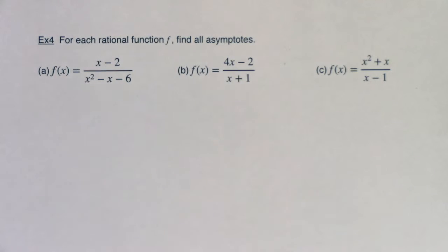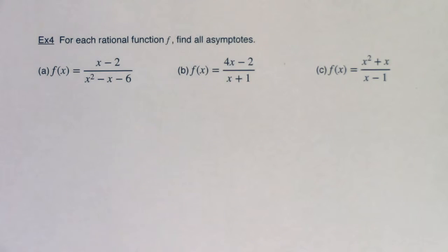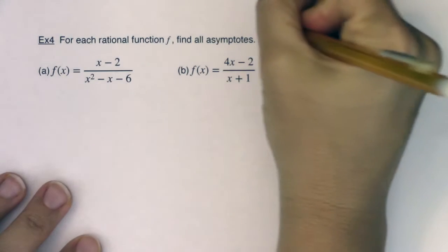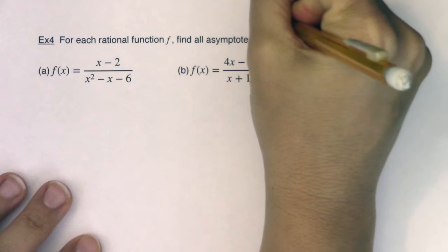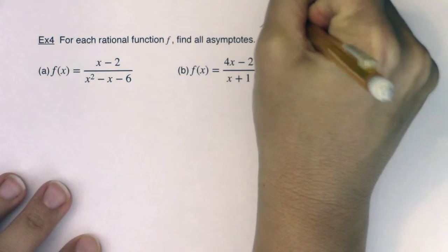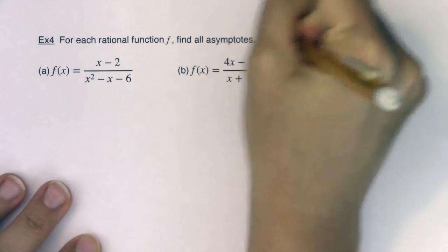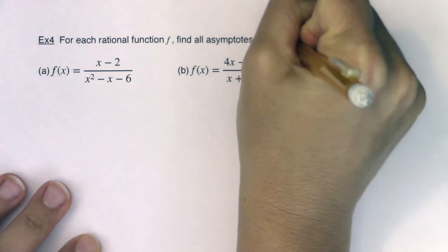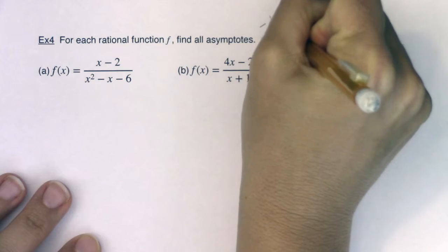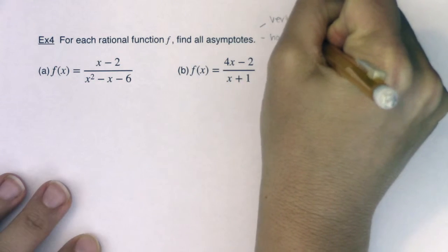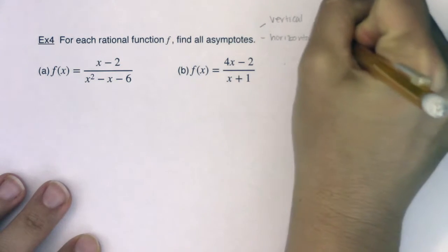Hey Math 31, let's take a look at example four. I have three rational functions out here and the direction says find all asymptotes. When I say find all, you can find me vertical, horizontal, or slant.